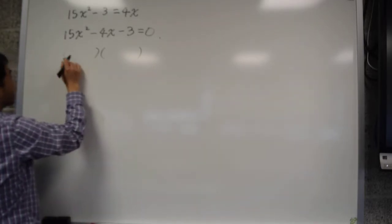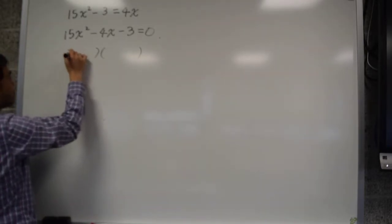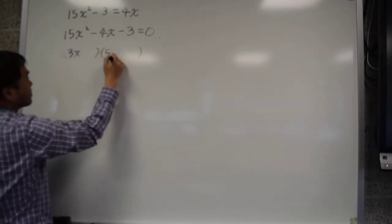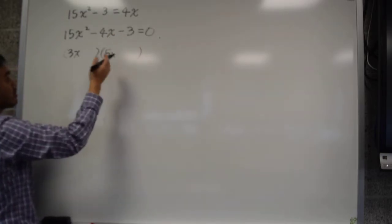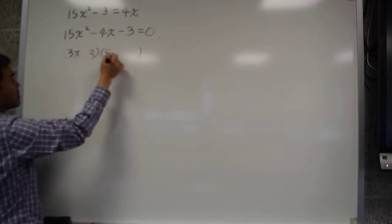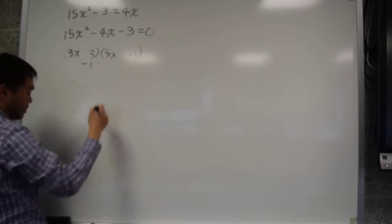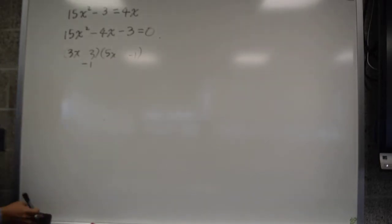Think about 15 is 3 times 5, so think about 3x and then 5x. And then negative 3 is 3 times 1, so you would try 3 and negative 1, or maybe negative 1, 3. You try all the combinations, and sometimes it works.